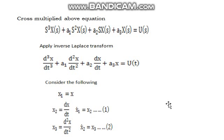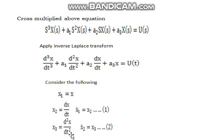We define x1 = x, so automatically x2 = dx/dt. Then dx/dt = dx1/dt = x1_dot, giving the first equation: x1_dot = x2. Next, x3 = d²x/dt². Since x2 = dx/dt, we get x2_dot = d²x/dt², so the second equation is: x2_dot = x3.